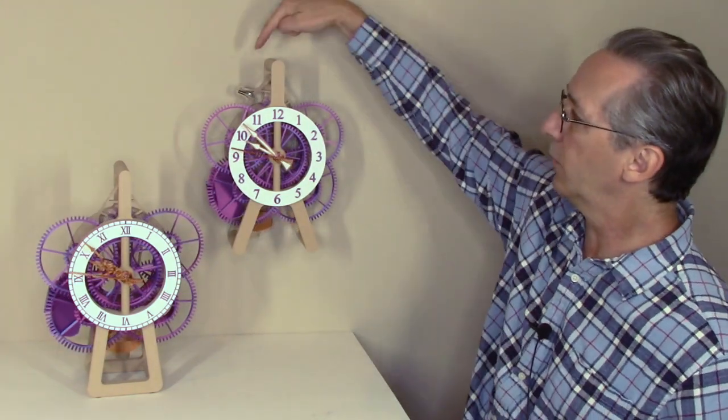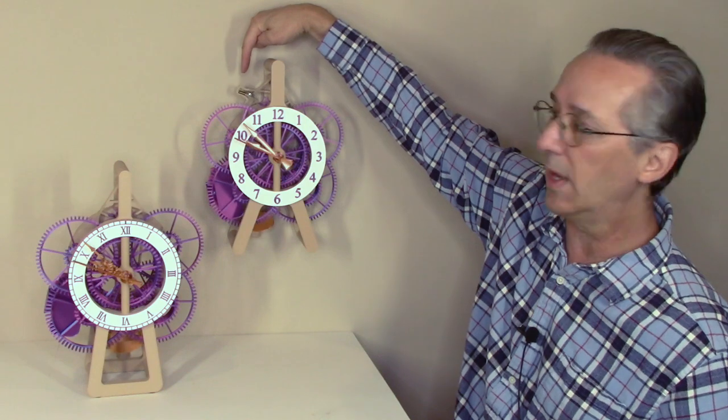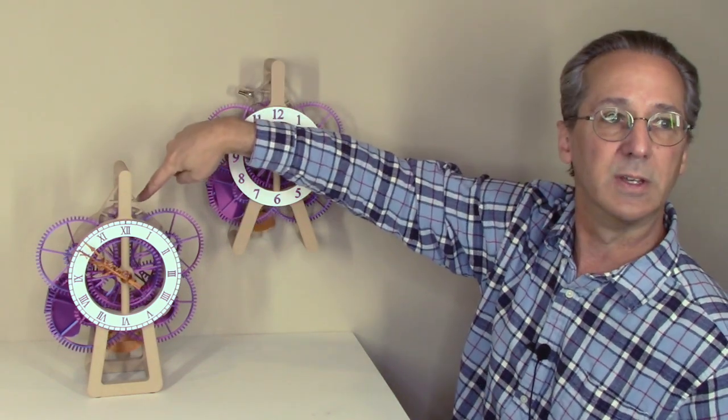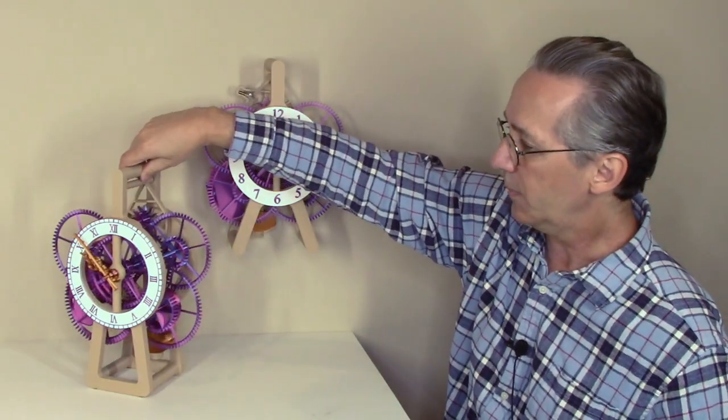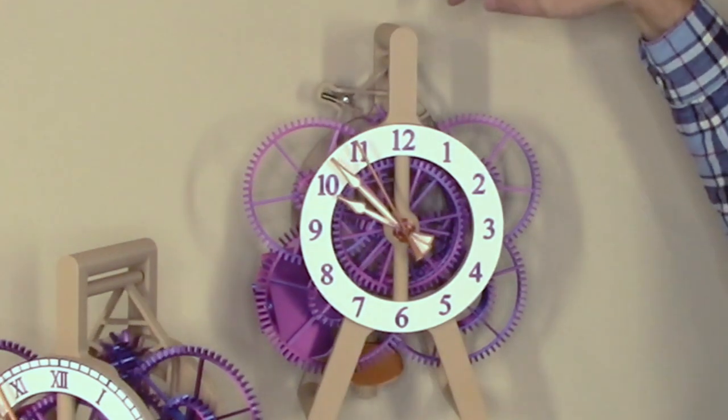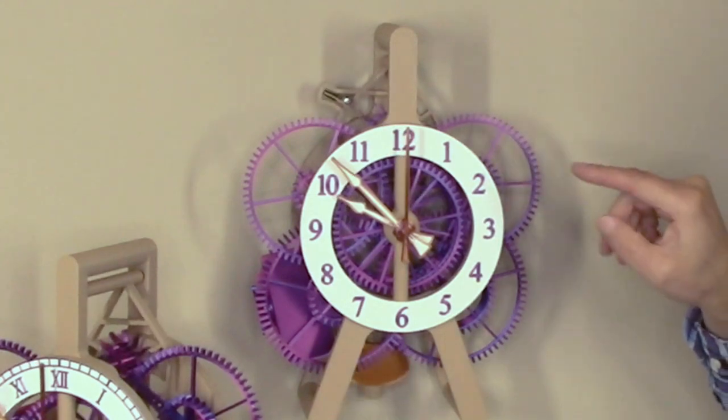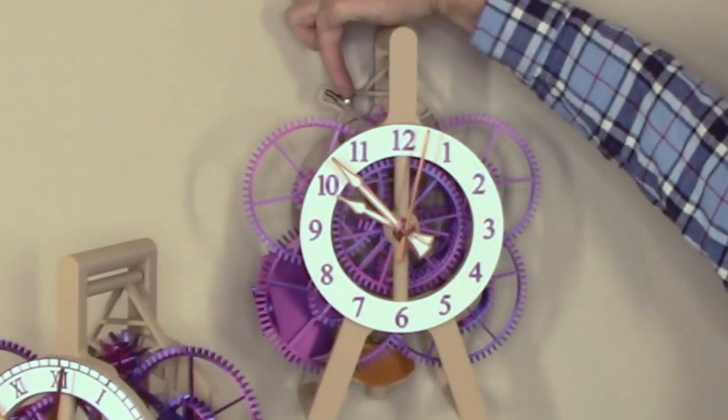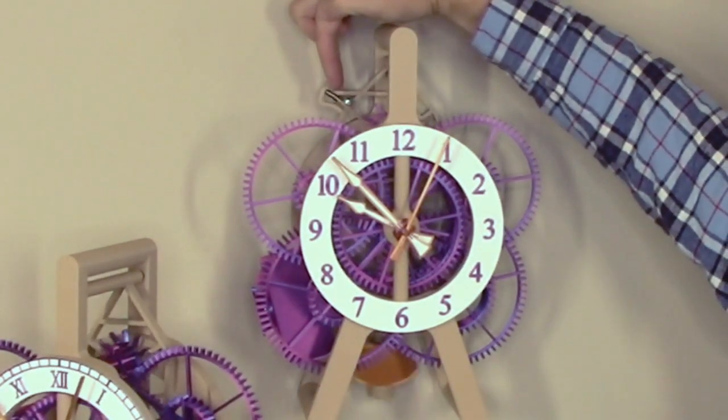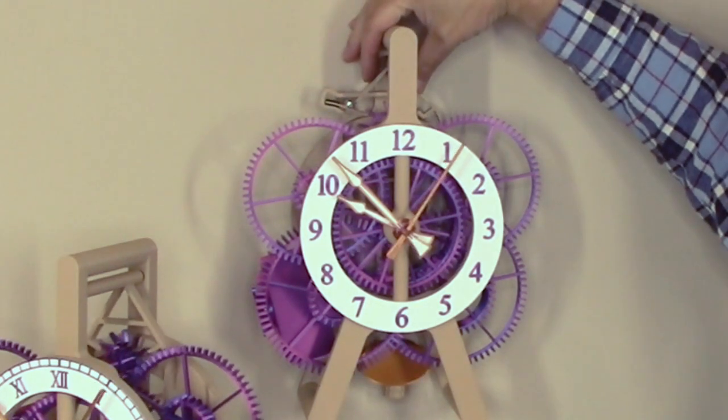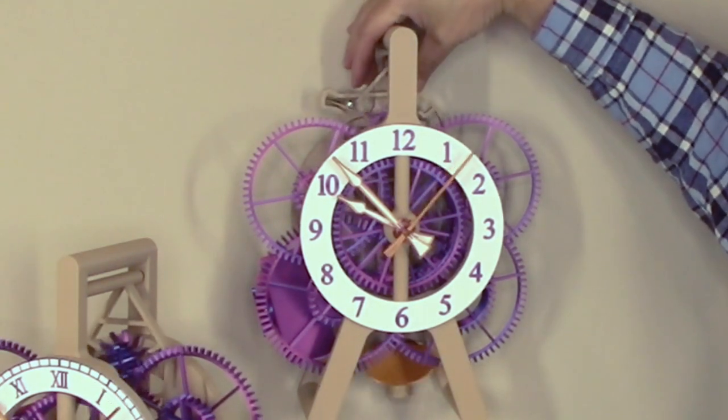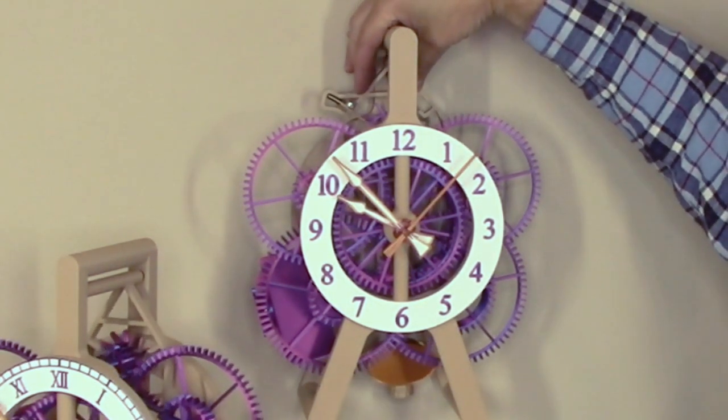The clock also comes with a Coup Perdu escapement or a traditional deadbeat escapement. The Coup Perdu, if you notice the second hand, it ticks 60 times per minute. That's because this lever arm right here halts the motion of the escapement for one half of the cycle.